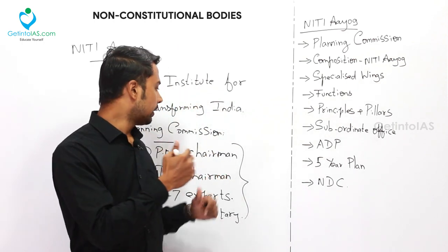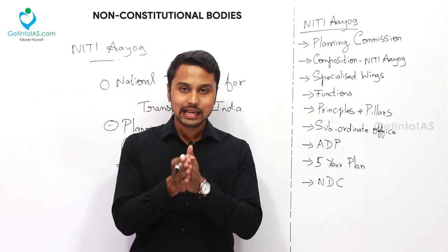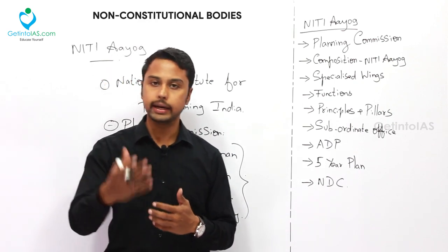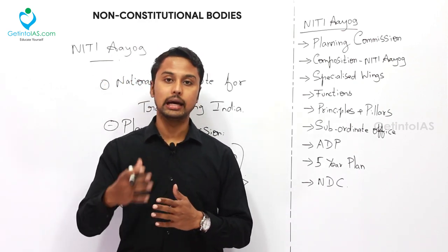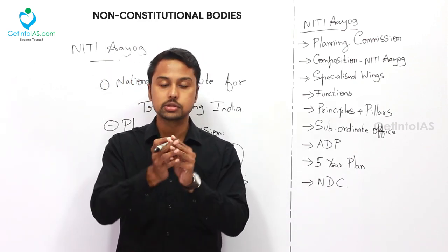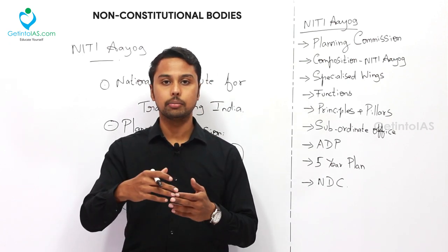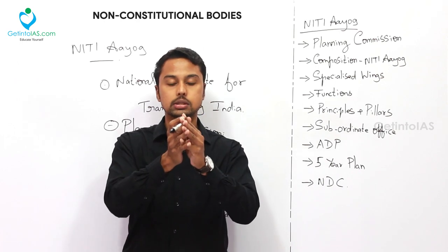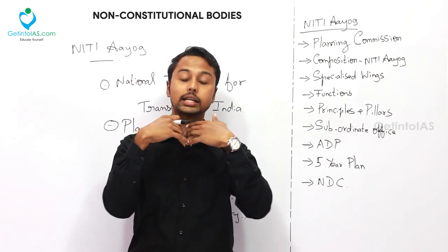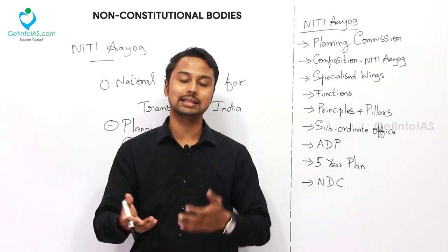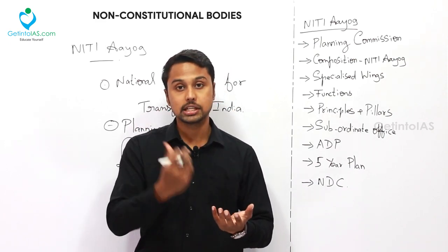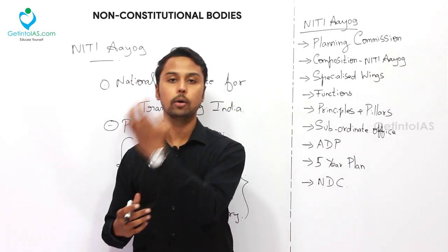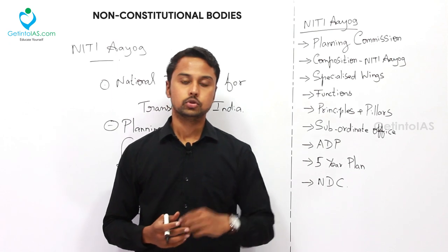The Planning Commission was established as an advisory body only. The advice given by the Planning Commission was not binding on the government. But day by day it became very serious, and the recommendations were taken by both the central and state governments. That is why the Planning Commission became a very important institution.